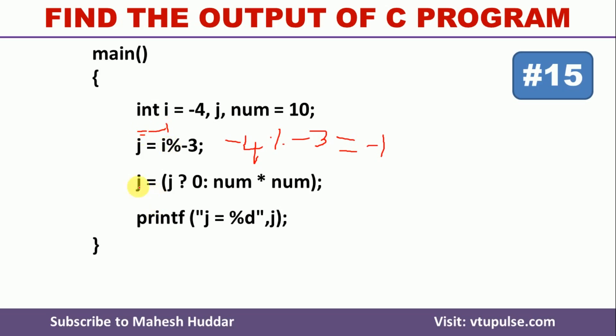Next, again, this minus 1 is used in this conditional statement. So minus 1 is nothing but true because anything other than 0 is considered as true in C programming language. So j is equivalent to minus 1. Minus 1 is true. Because minus 1 is true, this one will be executed.